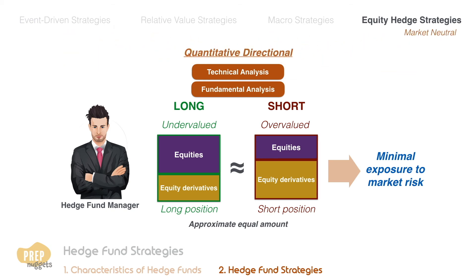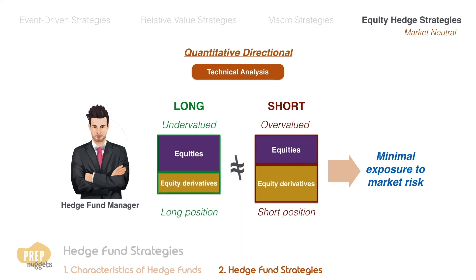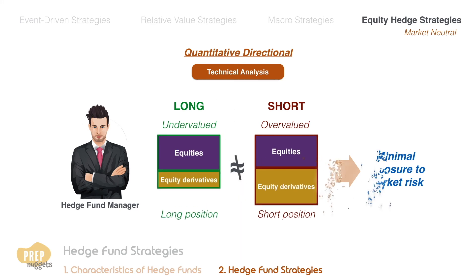Quantitative directional is the use of technical analysis to long equity securities believed to be undervalued and short securities believed to be overvalued. Unlike market-neutral, the managers do not strive to make the long and short positions equal.